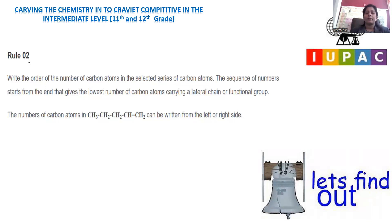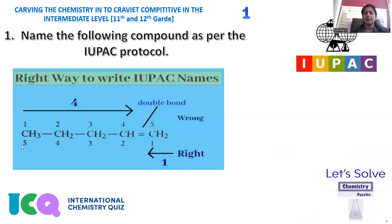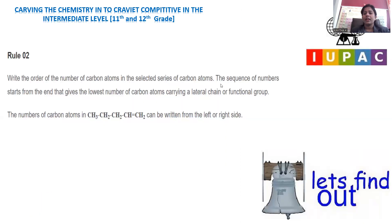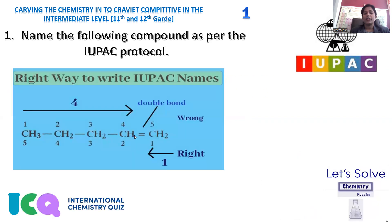According to rule number two provided by the IUPAC nomenclature, write the order of number of carbon atoms in the selected series of carbon. The series of carbon should be mentioned in a line. The sequence of numbers starts from the end giving the lowest number to the carbon atom carrying the lateral chain or the functional group.